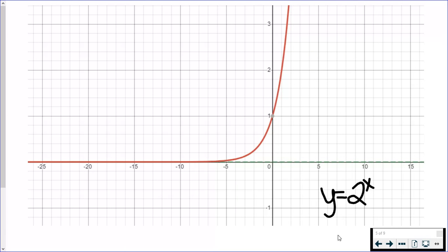I will show you the table of values and why this has what we call an asymptote. So, again, the function is y equals 2 to the x.